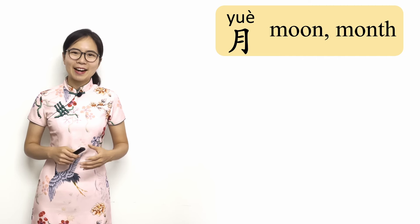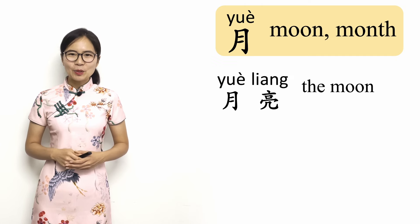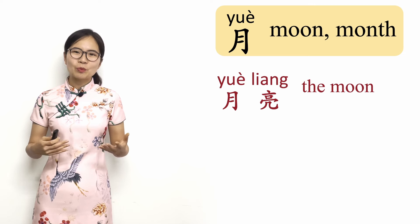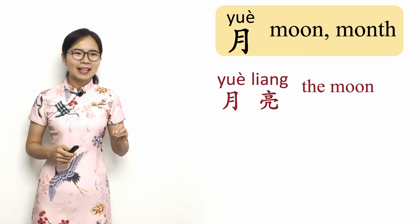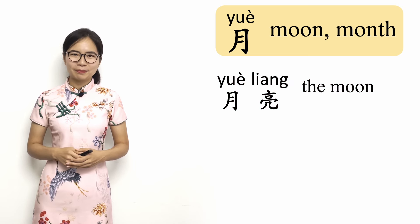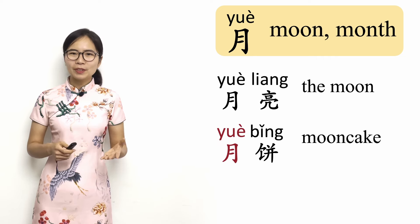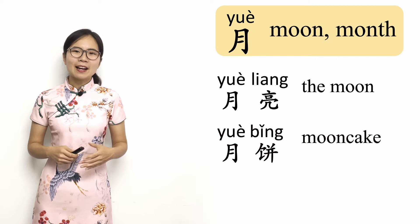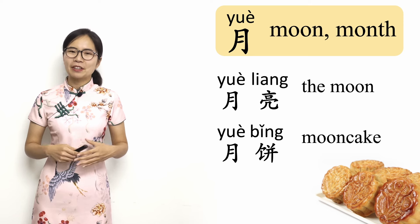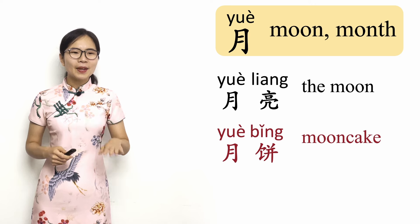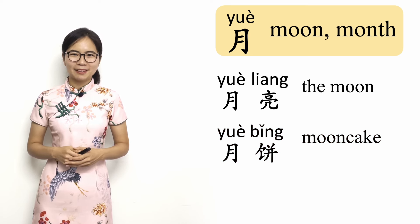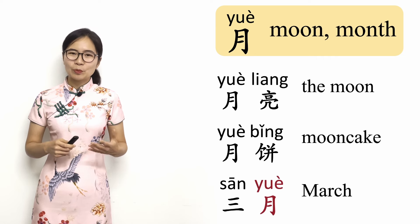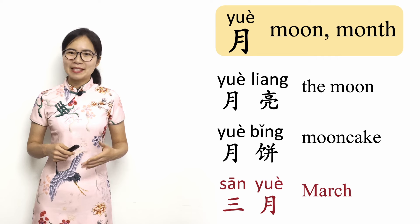Here are some example words that use the character 月. First is 月亮. 月 means moon and 亮 means bright. Together, 月亮 is the Chinese word for the moon. 月亮, the moon. Next is 月饼. 月 means moon and 饼 means pancake. Together, 月饼 means mooncake. Mooncakes are traditional treats that Chinese people eat during the mid-autumn festival. 月饼, mooncake. Then 三月. The character 三 is the number three, and 月 in this word means month. So together, 三月 means the third month.